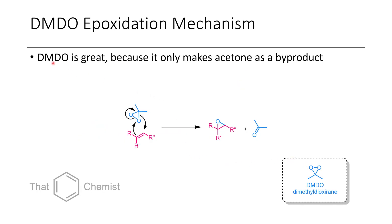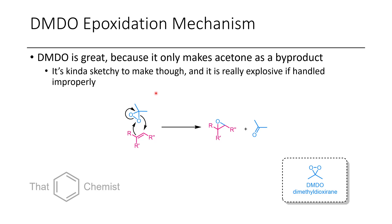Another interesting choice is DMDO. It's really great because your only byproduct is acetone. However, when you prepare it, it can be quite explosive because it uses other peroxides in its preparation. It has a very low ratio of carbon to oxygen and resembles acetone peroxides, which are typically used as explosive devices. So you want to be very careful if you're ever working with DMDO. If you're considering using this on any significant scale — more than maybe 0.1 to 1 millimole — it would be good to run this past a supervisor or someone far more skilled before attempting it. They can be quite dangerous, and it's important to be careful when working with peroxides, especially this type.